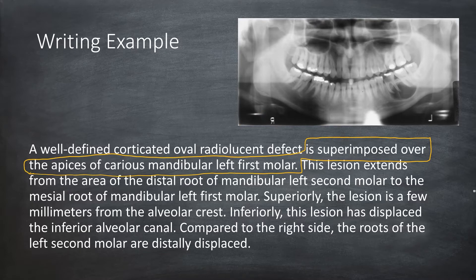Now we are describing the location of the lesion — it is superimposed over the apices of the carious mandibular left first molar. Create the habit of using the word 'superimposed.' It means that the lesion may be buccal to the roots, lingual to the roots, or around the roots. We do not yet know the relationship of the lesion with the roots. A panoramic radiograph is a two-dimensional image, so we have to mentally think if this lesion is actually associated with the roots.